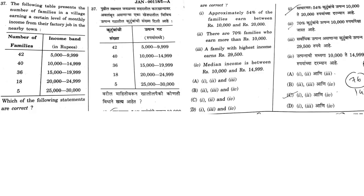Statement 2 says 70% of families earn more than 10,000. Calculating: 40 plus 36 plus 18 plus 5 equals 99, divided by 141, which is approximately 70%. So Statement 2 is also correct. Options A and C both require Statements 1 and 2 to be correct, so others are eliminated. Statement 3 — that the highest income family earns 29,500 — is wrong because the table shows the upper limit as 30,000. Therefore, the answer is C.